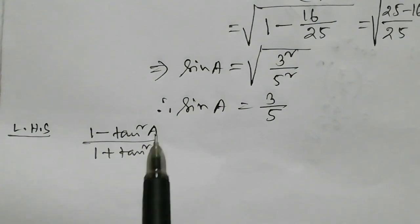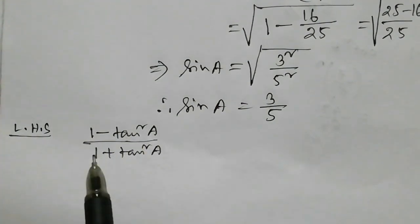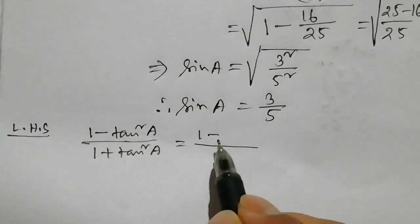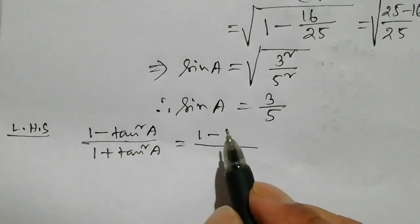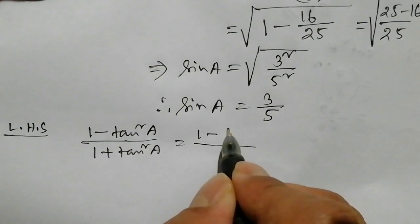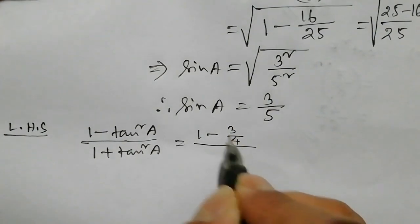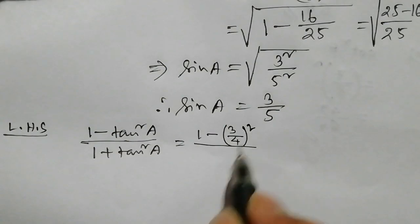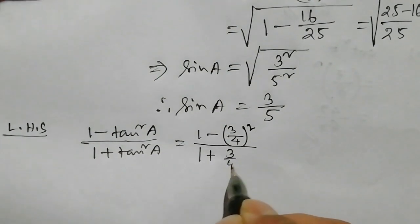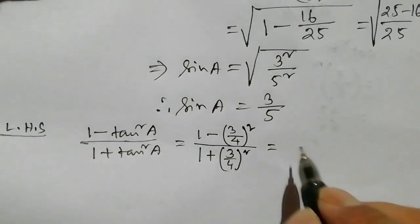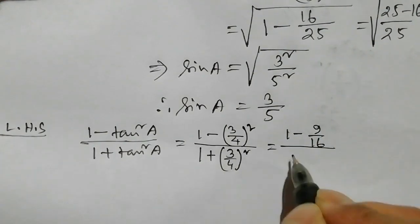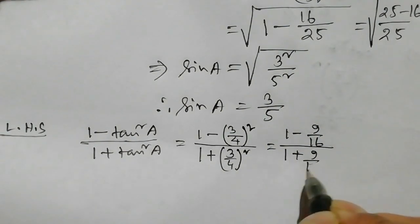Now substituting into the LHS: 1 minus tan square A divided by 1 plus tan square A. With tan A equals 3 by 4, we get 1 minus 9 by 16 divided by 1 plus 9 by 16, which is 16 minus 9 over 16 divided by 16 plus 9 over 16.